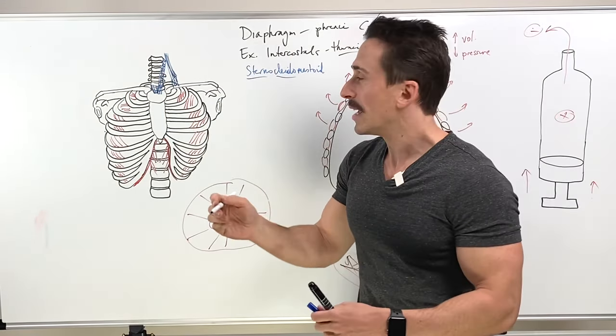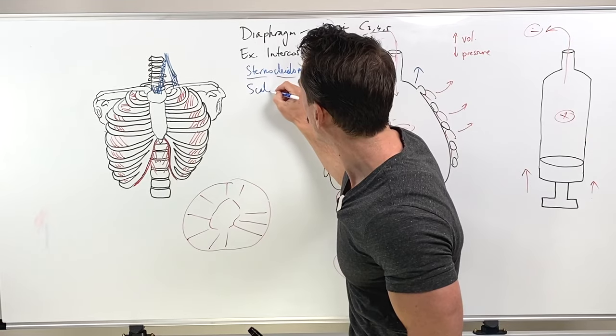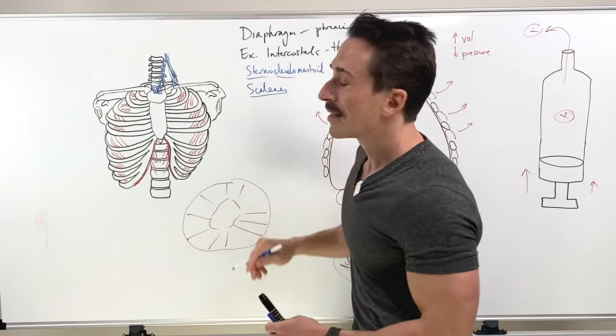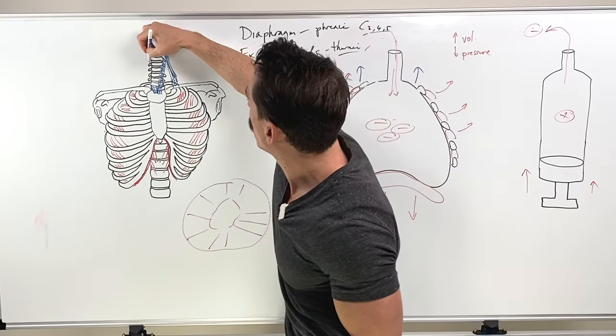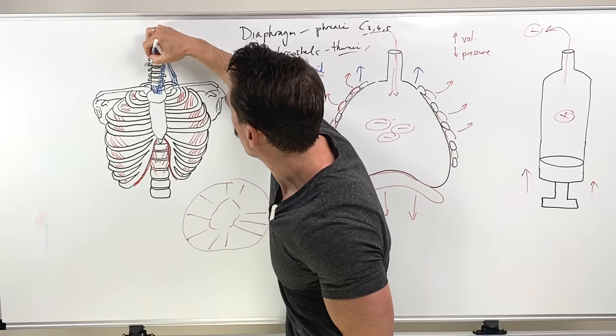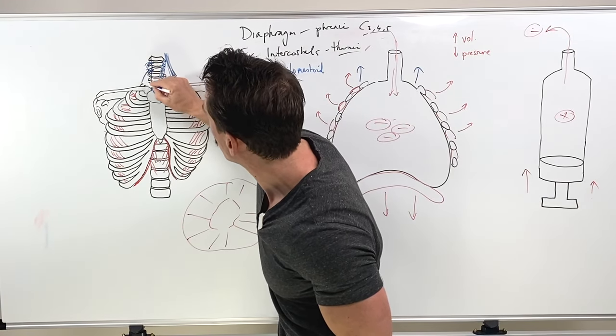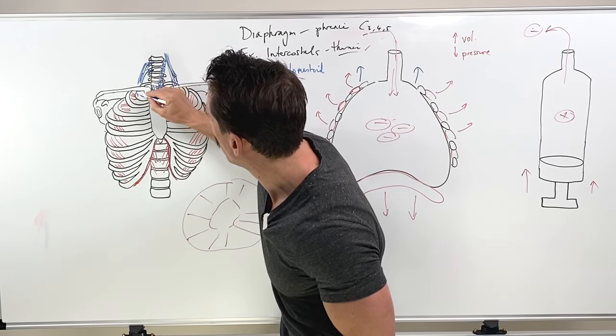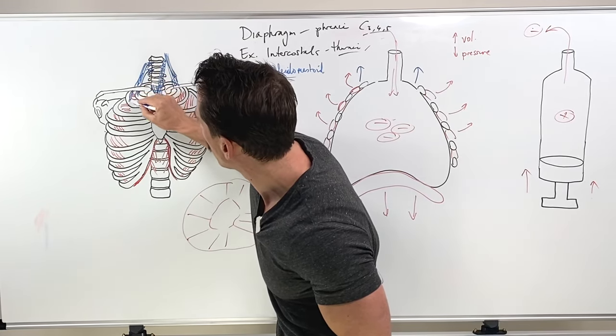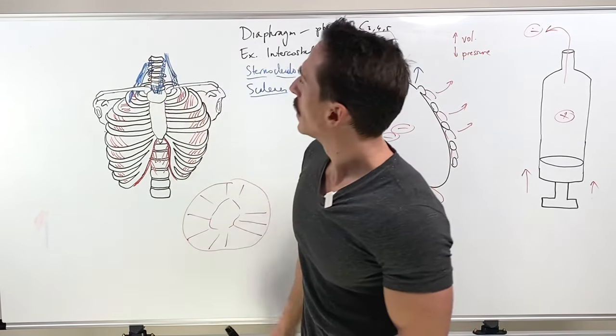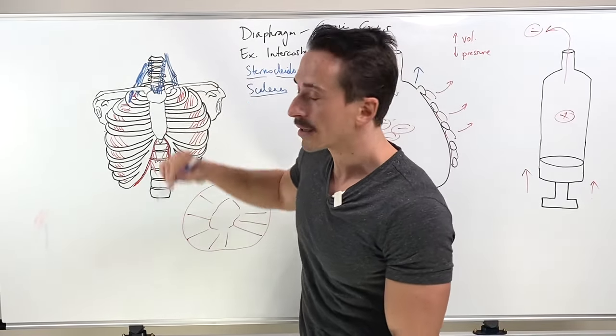All right. So that's the sternocleidomastoid. Next is going to be the scalenes. The scalenes have their origin at the cervical vertebrae and they insert at the top two ribs.